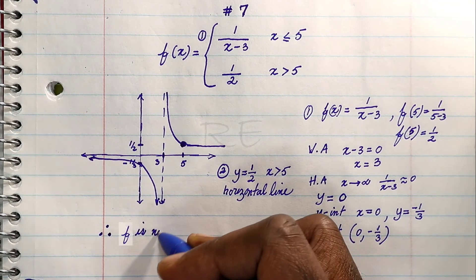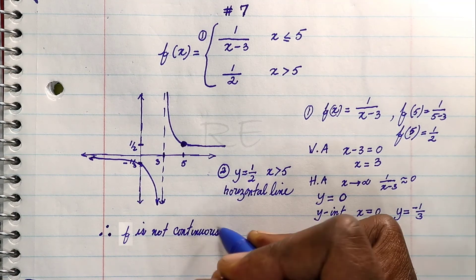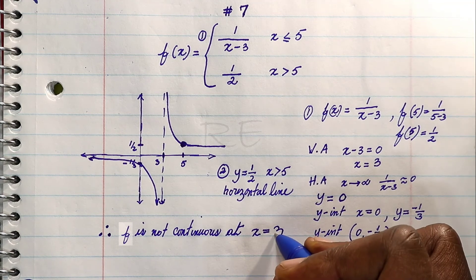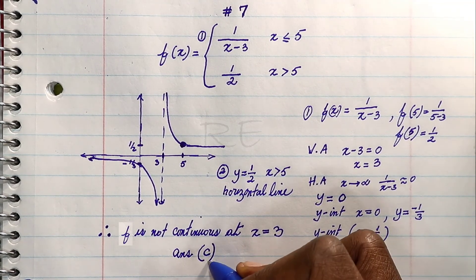Our conclusion is f is not continuous only at the vertical asymptote, which is at x equals 3. The correct answer is c.